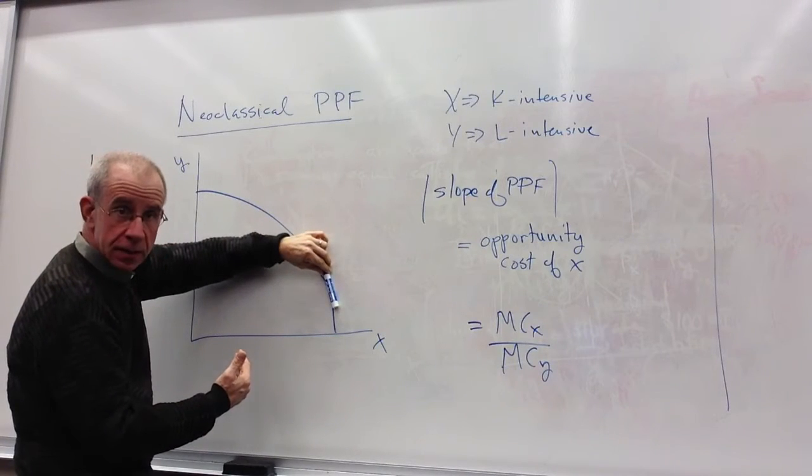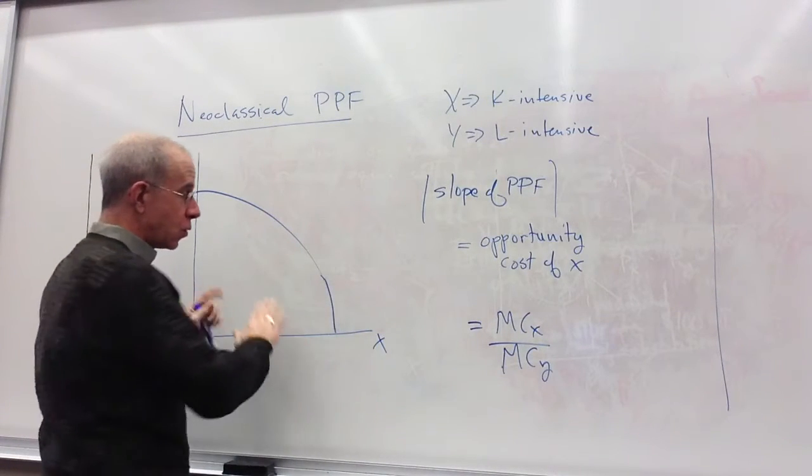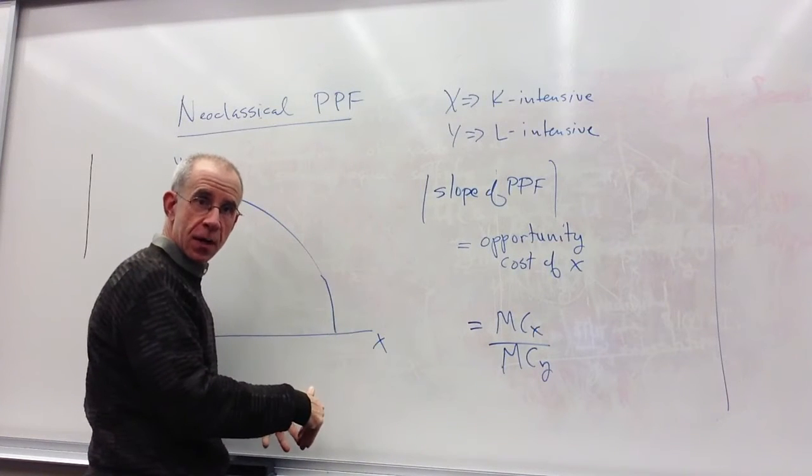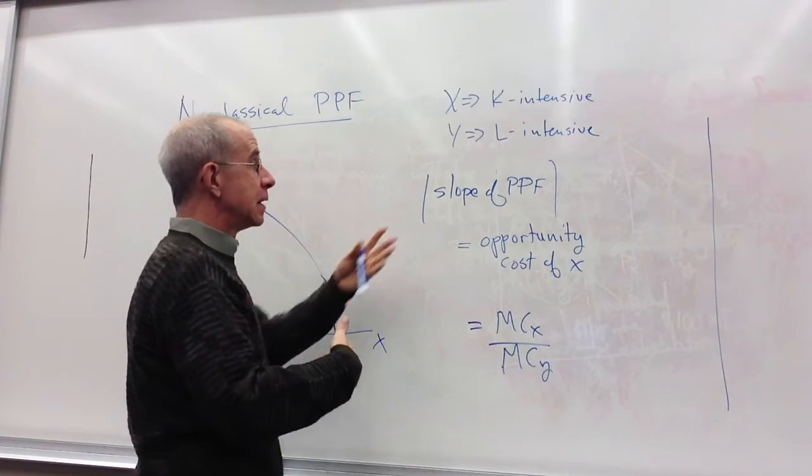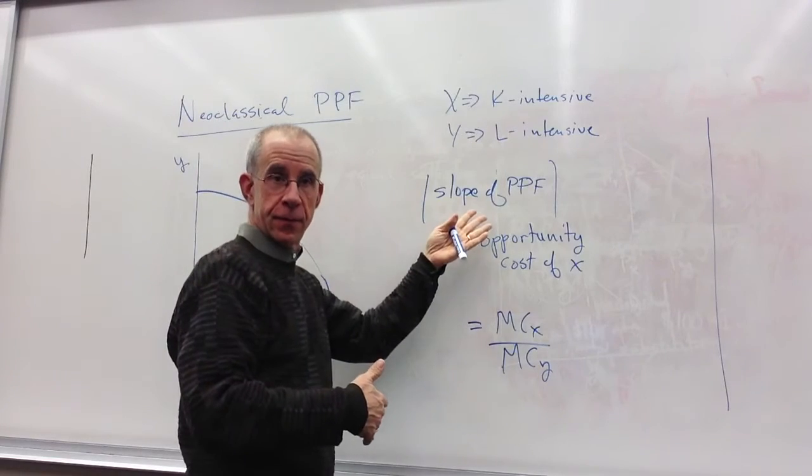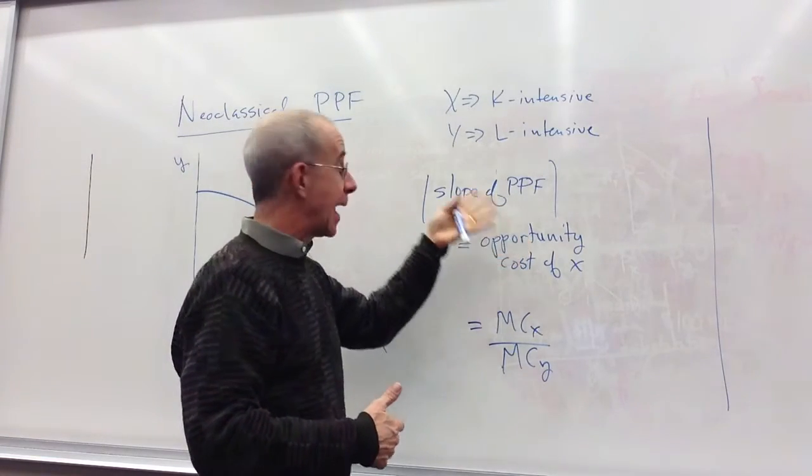The slope gets steeper. So as you increase the production of X and reduce the production of Y, the slope of the PPF is getting bigger in absolute value terms.